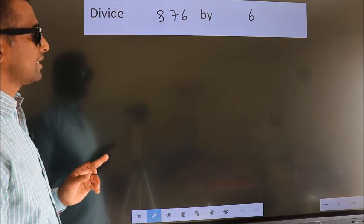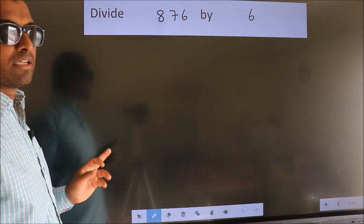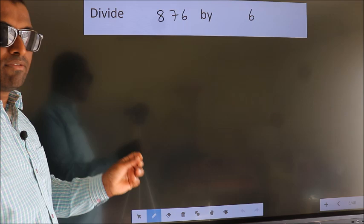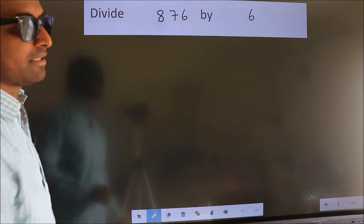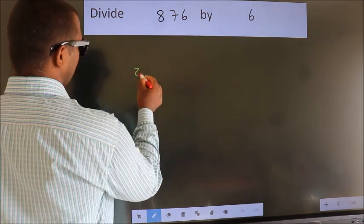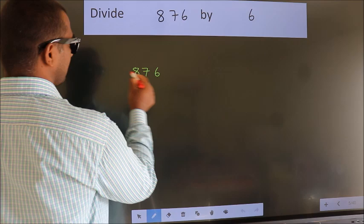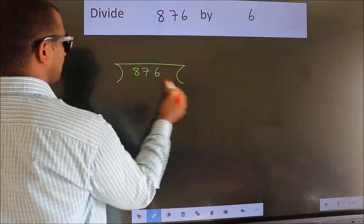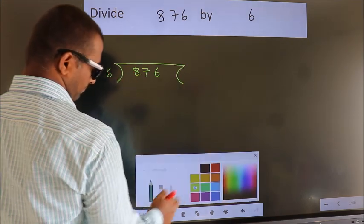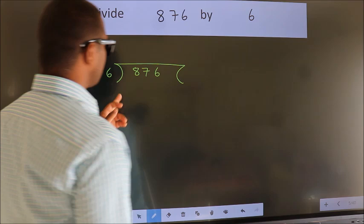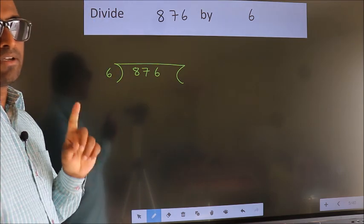Divide 876 by 6. To do this division, we should frame it in this way. 876 here, 6 here. This is your step 1.